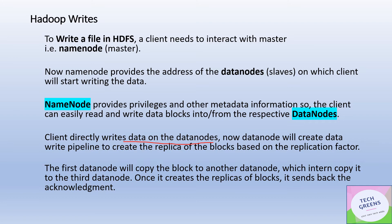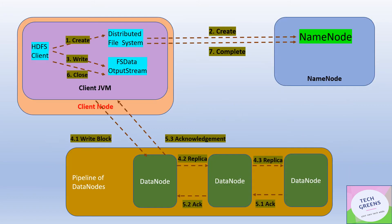Now let's see in detail what exactly happens when you try to write a file in HDFS. First, the HDFS client will try to create a distributed file system, which in turn will talk to the NameNode, get the list of DataNode addresses and locations. Then an FSOutputDataStream is created, which in turn starts writing the blocks to the DataNodes from the list of available DataNodes.